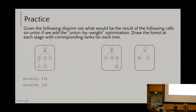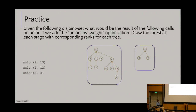Next: union(4, 12). If I call find(4), I get back 6. If I call find(12), I get back 8. What is the weight — how many nodes — in the tree whose overall root is 6? Six. And the weight of the tree whose representative is 8? Five. So 8's tree gets added into 6's tree. We just take 8 and add it over, giving us this funky-looking tree. These are n-ary trees — they can have as many children as they want.